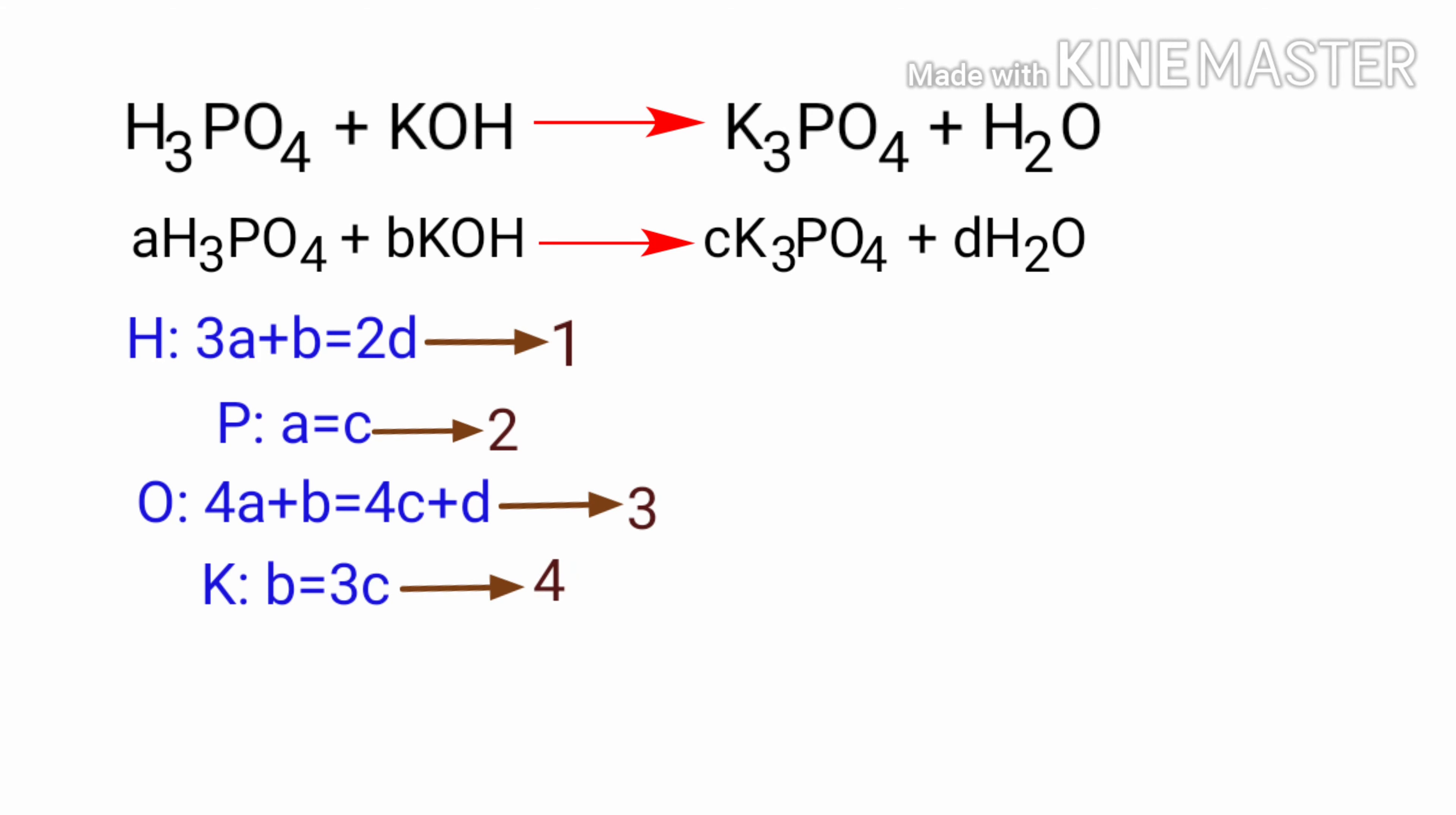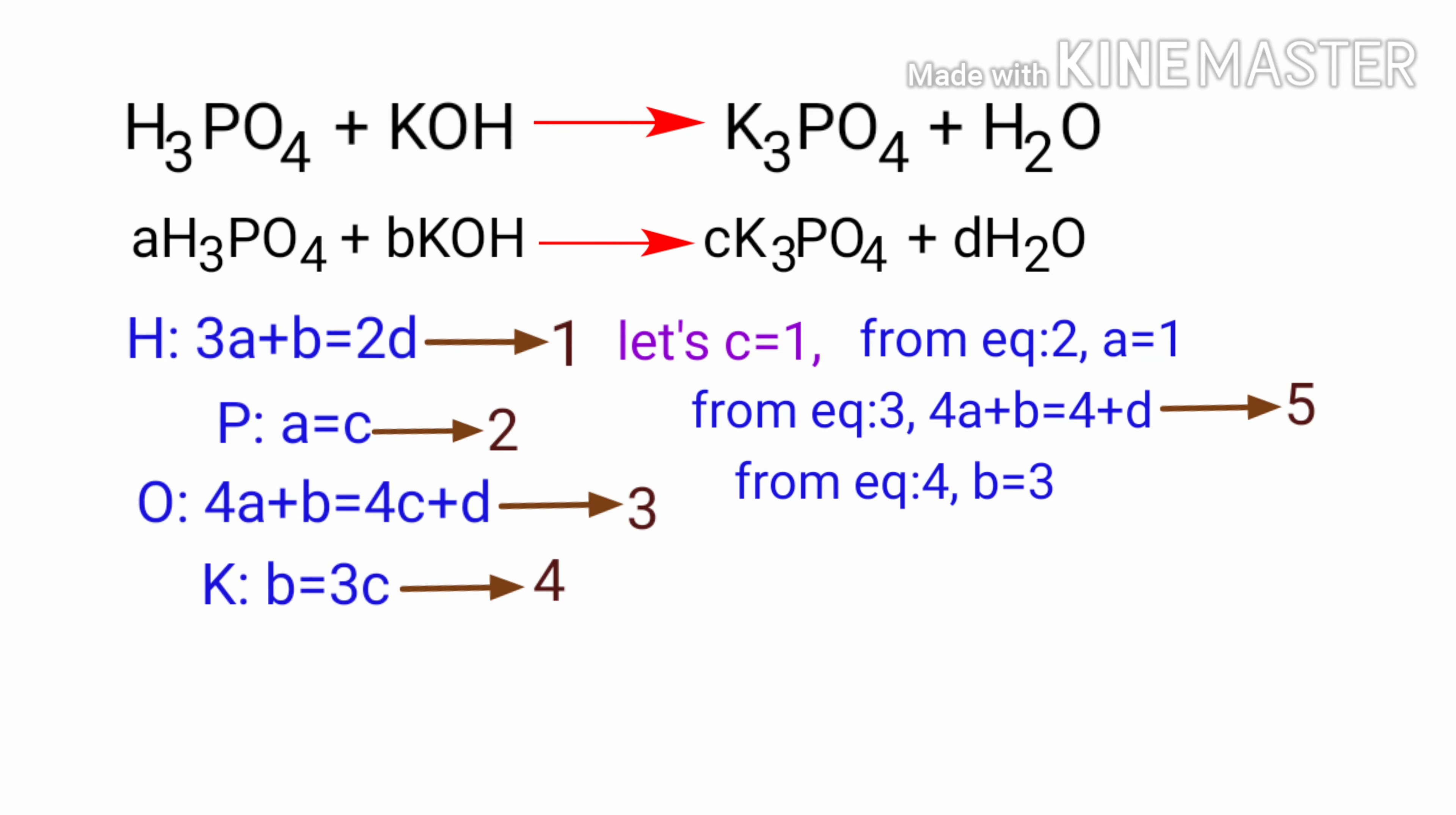Now we can solve the four simultaneous equations. It looks almost impossible, but we know that the coefficients must be integers. Let's set c equal to 1. Then from equation 2, a equals 1. From equation 3, 4a plus b equals 4d. From equation 4, b equals 3. Now you can apply the a and b values.